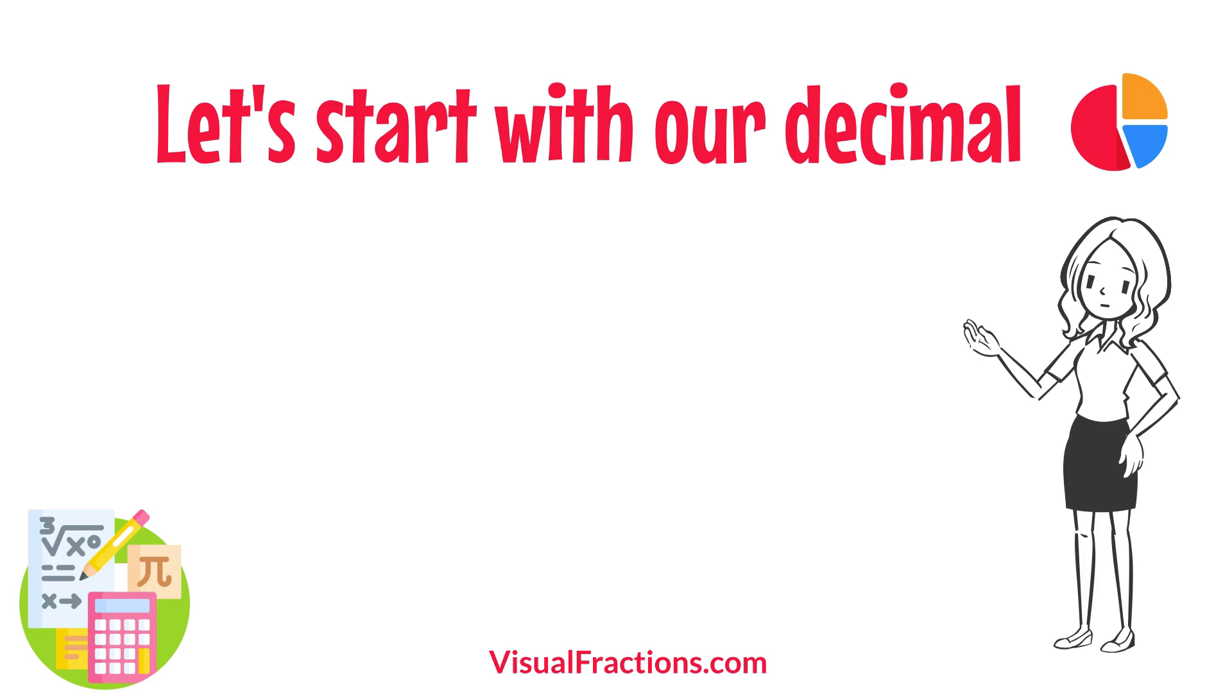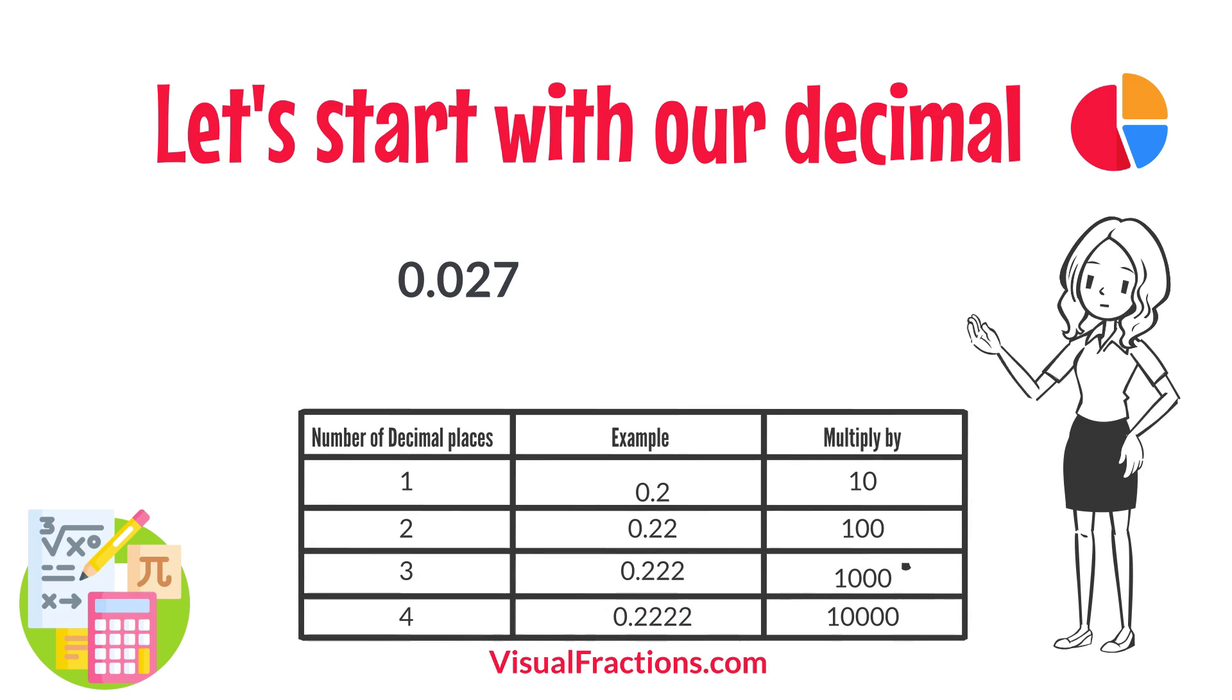Let's start with our decimal, 0.027. Notice there are three digits to the right of the decimal. This places it in the thousandths position.